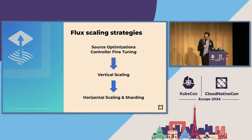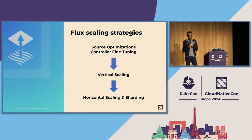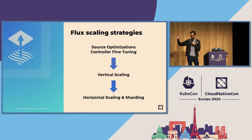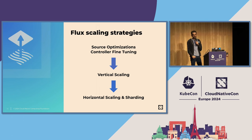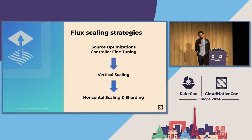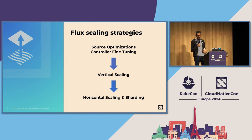Scaling strategies: how do you make Flux work at huge scale? I suggest going through a journey rather than jumping directly to wanting Flux horizontal scaling with hundreds of instances. I recommend you first look into source optimization and controller fine tuning, then go to vertical scaling, and lastly, if nothing works, then you should do sharding.